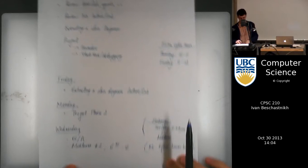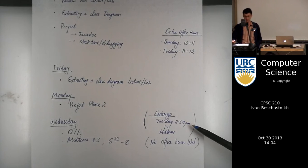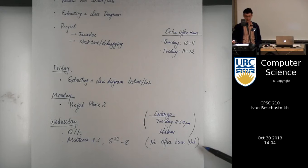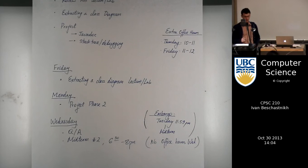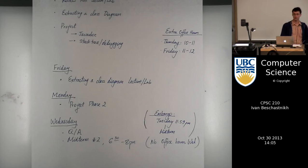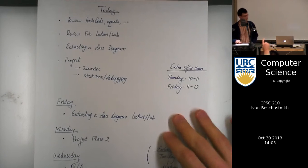Wednesday is the midterm. We have a similar approach to last time — we're going to have the embargo again, running from Tuesday at midnight to the time of the midterm. The only exception is lecture. There will be no office hours on Wednesday, so you really need to come today, tomorrow, or Friday. Midterm number two is in the evening on Wednesday. We'll use the lecture time on Wednesday to do a Q&A. The Piazza has been updated with all the topics you need to know for midterm number two.